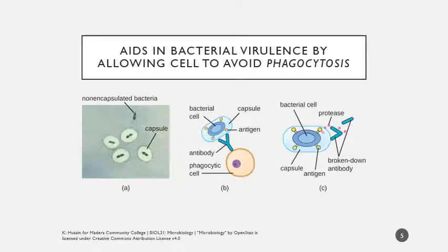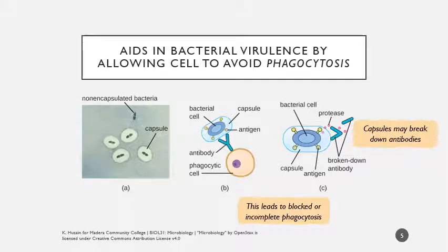To really emphasize why we care about viewing capsules: these capsules protect the bacterial cell and aid in its virulence. They can actually help break down our antibodies by releasing different enzymes that cleave apart those antibodies, meaning we can't even target or flag the bacteria for breakdown. This may lead to blocked or incomplete phagocytosis. Both innate immunity and adaptive humoral immunity are going to be impaired by the presence of a capsule. So we really do care about the presence of capsules.